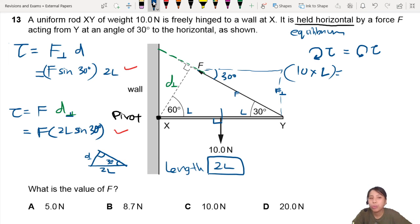It's just up to you which one you are more comfortable with. So I'm just going to write here. F sine 30 times 2L. Sometimes, by the way, one method might be easier than the other. Anyway, let's continue.